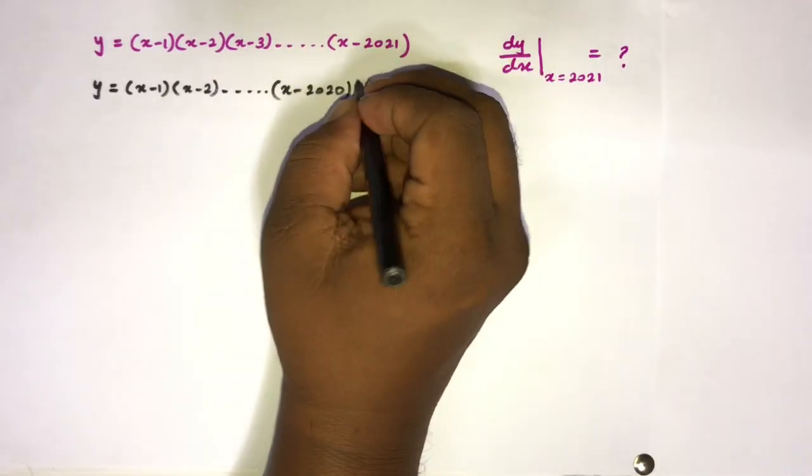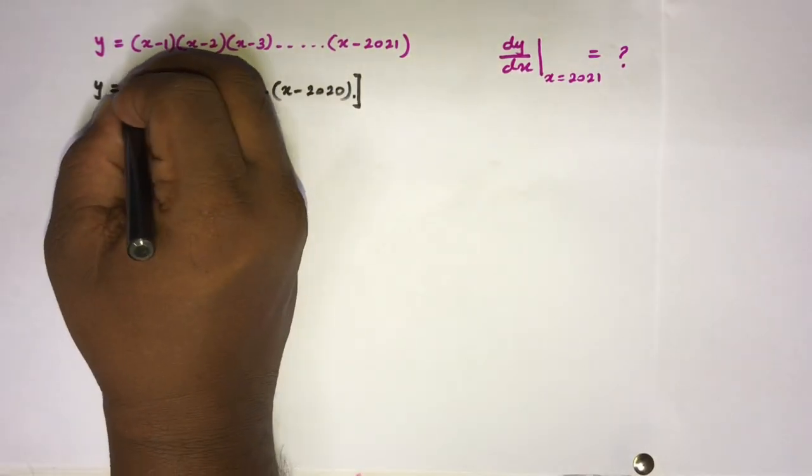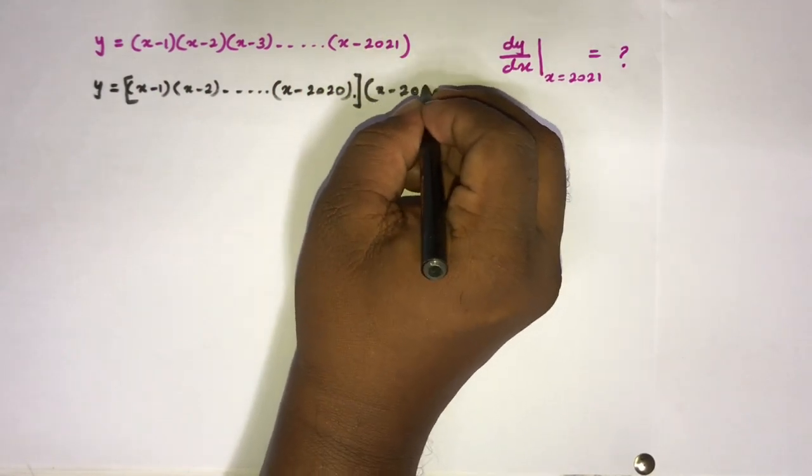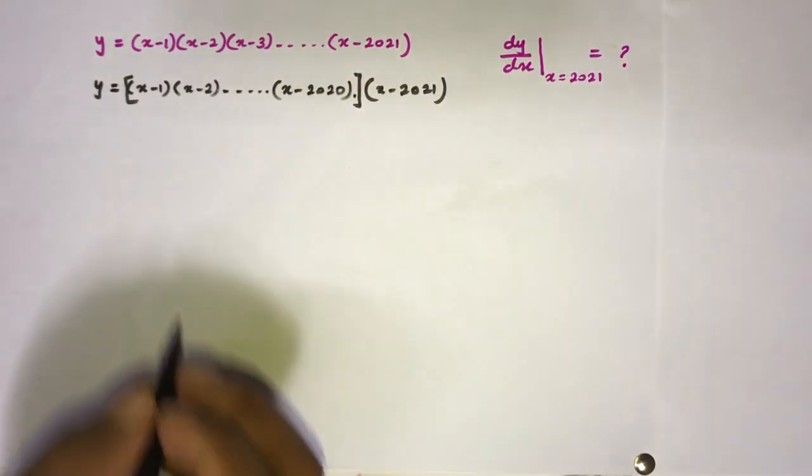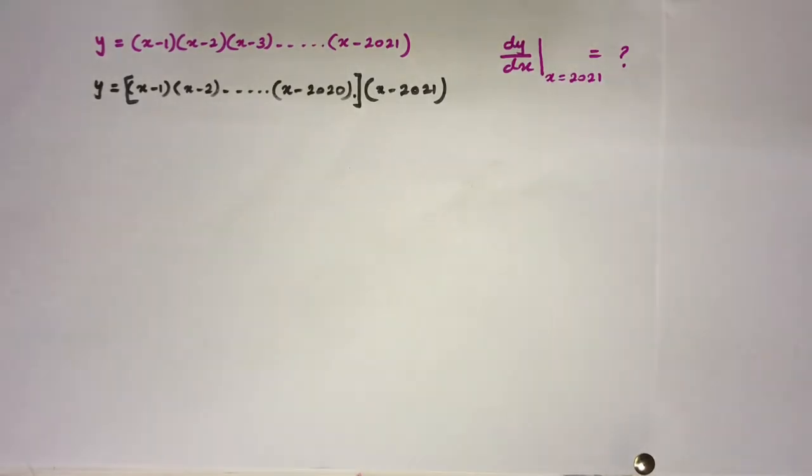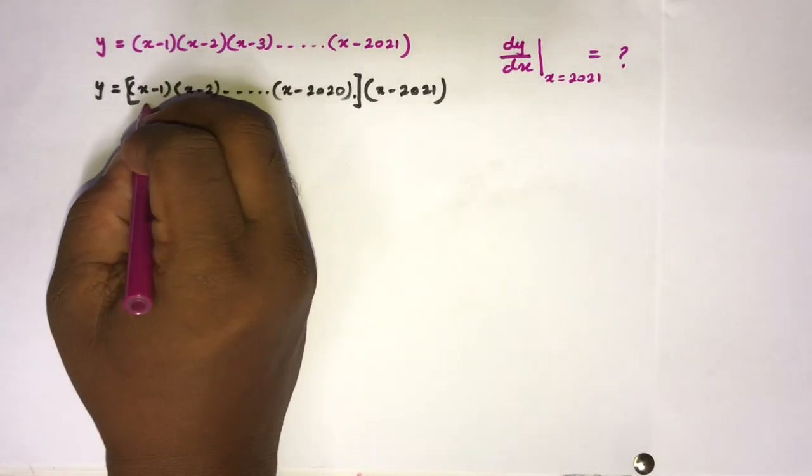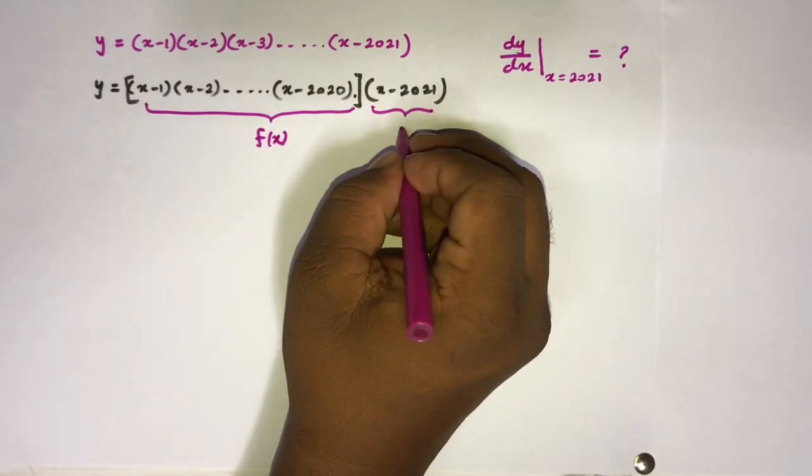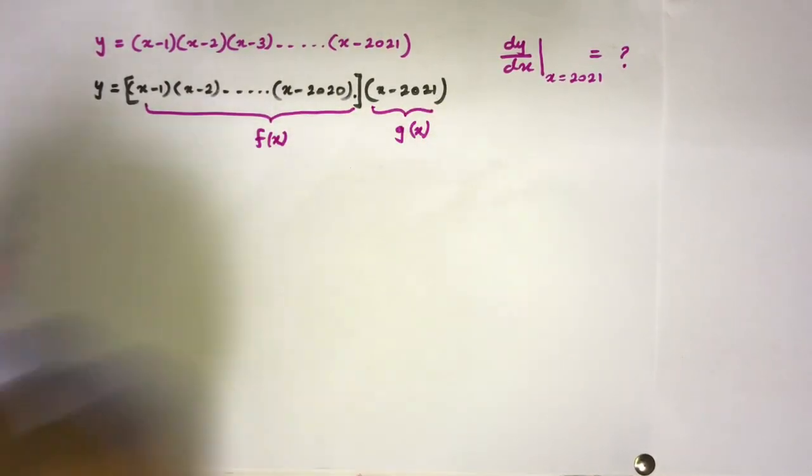We can write this times (x-2021). Now we have a product of two functions - I'm going to take this function as f(x) and this is g(x).